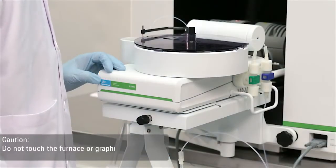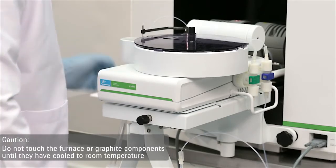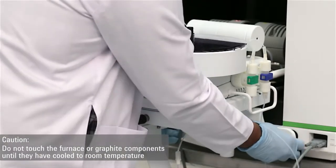Before we replace the graphite tube, we need to clear the auto sampler. Release the left and right locking knobs and swing the auto sampler away.